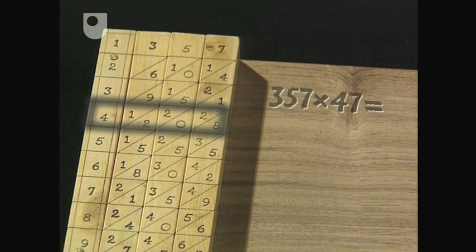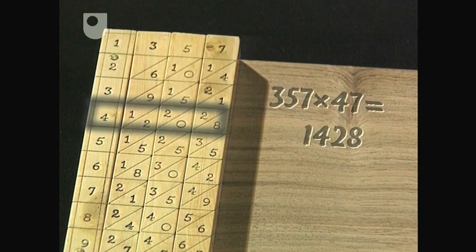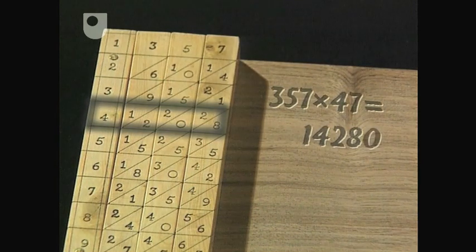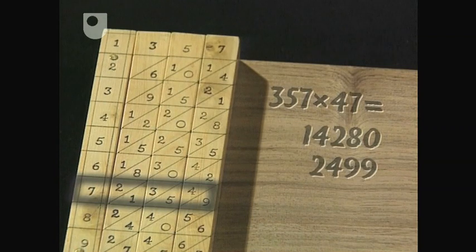Reading the diagonals across the 4 line gives 1, 4, 2, 8. Add a zero and you've multiplied by 40. Next, read the diagonals across the 7 line: 2, 4, 9, 9. It takes just one more addition to get the answer.